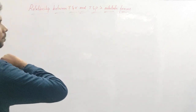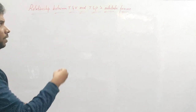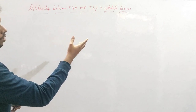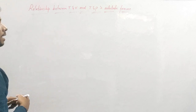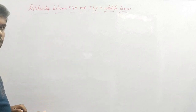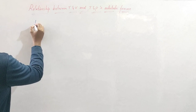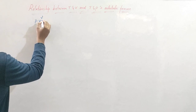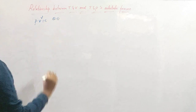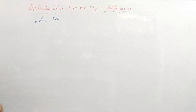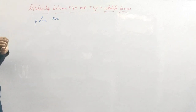Now, as we know from the adiabatic process — we have already discussed about it and derived the relation — the adiabatic process follows the law PV^γ = constant, and work done in the adiabatic process has also been seen. There is no heat transfer, Q = 0.